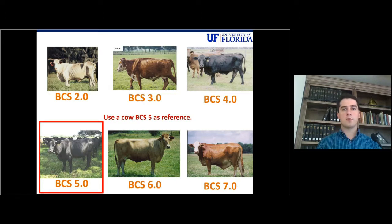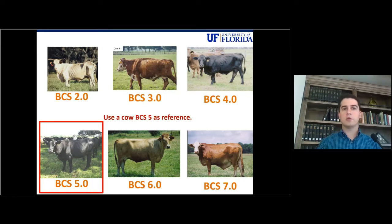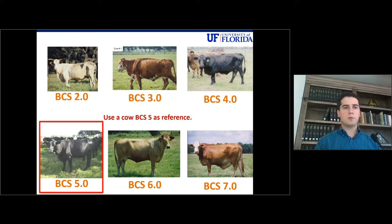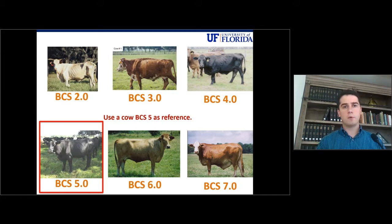At body condition score 3, you will see the entire rib cage but it's going to be hard. And you will also be able to see the backbone, but you cannot identify the individual processes of the spine. And if she's on a body condition score of 2, you will be able to see the entire rib cage and every individual process of the backbone.